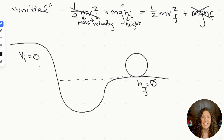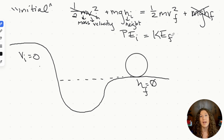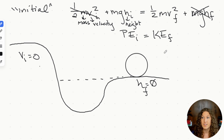Now we're left with initial potential energy equals final kinetic energy. This makes sense conceptually: starting at rest means maximum potential energy, and at the final state we have maximum kinetic energy — trading potential for kinetic energy. Rewriting: mgh initial equals one half mv squared final.